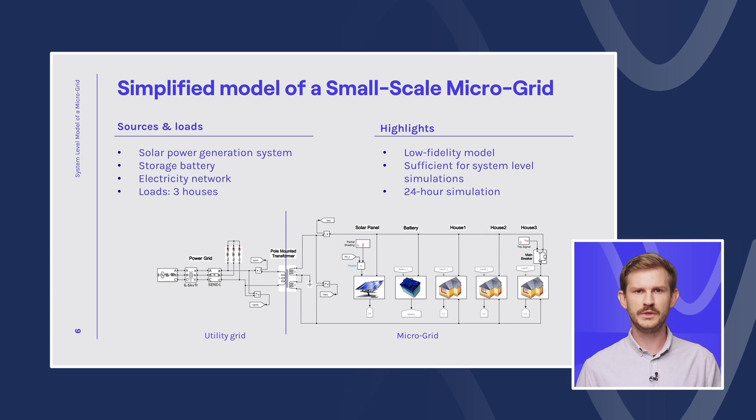First, we are going to simulate the behavior of a simplified model of a small-scale microgrid during 24 hours on a typical day. The model you see underneath is a single-phase AC network. Energy sources are an electricity network, then we have a power generation system and a storage battery. On the other hand, the electric loads are represented by the three houses that are connected to the grid. In our simulation we will aim to validate our component sizing and we will also want to see how dependent are we of the utility grid.